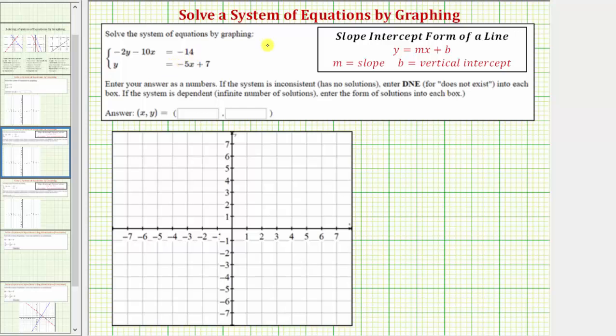We're asked to solve the system of linear equations by graphing. To do this, we graph both linear equations on the same coordinate plane and interpret the results. We're told to enter the answer as numbers. If the system is inconsistent, meaning it has no solutions, we enter DNE into each box. If the system is dependent, meaning it has an infinite number of solutions, we enter the form of solutions into the box.